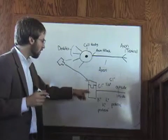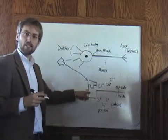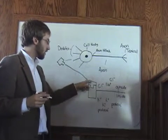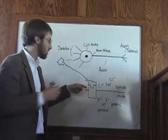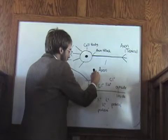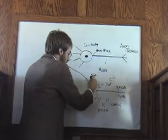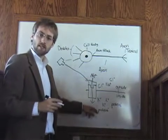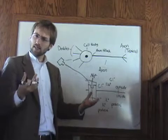And so we call this a receptor-gated channel, because when the neurotransmitter comes and binds to it, it turns the channel on, so that then a sodium can go through the channel into the neuron cell, and make the cell more positive.